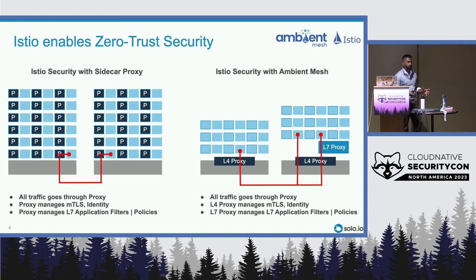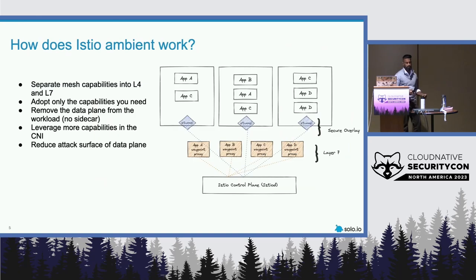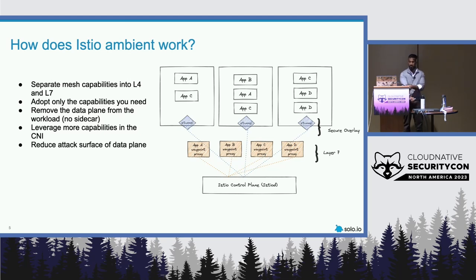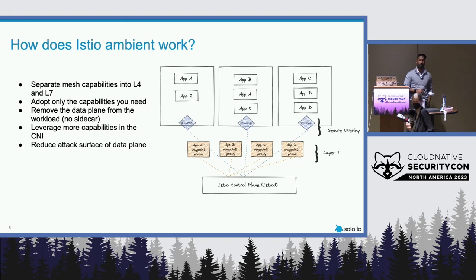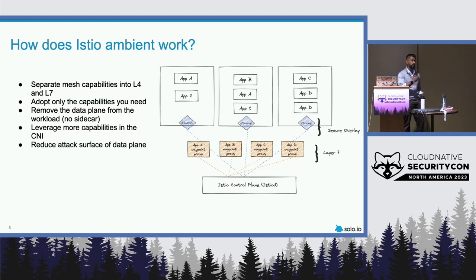The mode of operation changes here — the direction of traffic changes — and this means we can provide Istio or service mesh-like capabilities for workloads that don't need the sidecar, as well as for workloads that do take advantage of the sidecar. We deploy something called a CNI node pod, deployed as a daemon set alongside the Z-tunnel. The Z-tunnel is also deployed as a daemon set.